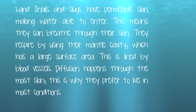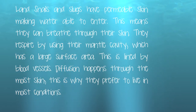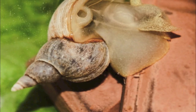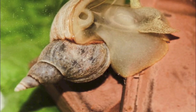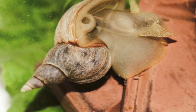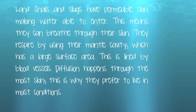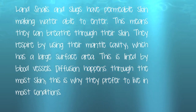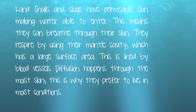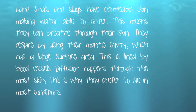Land snails and slugs have a permeable skin, making water able to enter. This means they can breathe through their skin. They respire by using their mantle cavity, which is a large surface area. This is lined by blood vessels, and diffusion happens through the moist skin.